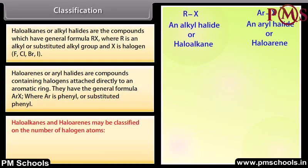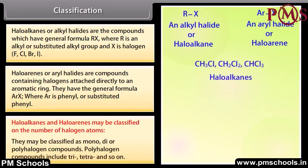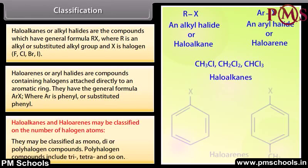Haloalkanes and haloarenes may be classified on the basis of the number of halogen atoms. They may be classified as mono, di, or polyhalogen compounds. Polyhalogen compounds include tri, tetra, and so on.